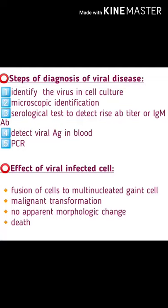Steps of diagnosis of viral disease: identify the virus in cell culture, microscopic identification, serological tests to detect rise in antibody titer or IgM antibody, detect viral antigen in blood, and PCR. Effects of viral infection on cells include: fusion of cells into multinucleated giant cells, malignant transformation, no apparent morphological change, and cell death.